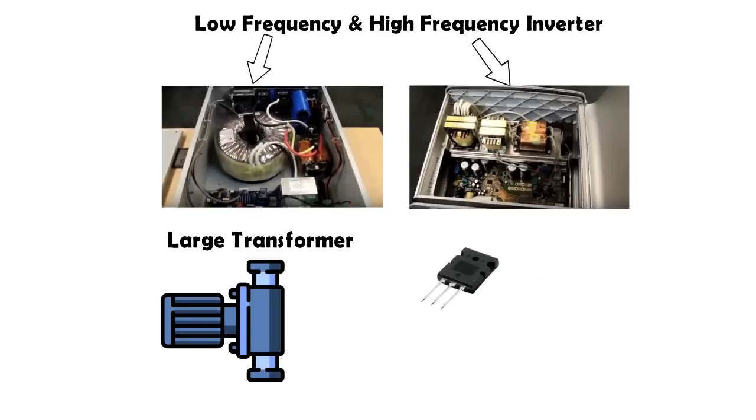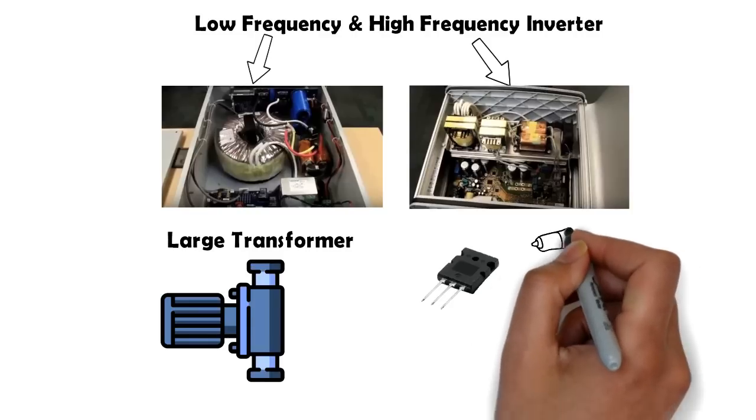In a high frequency inverter, there are almost twice the number of components compared to low frequency inverters. Nonetheless, they are still smaller and lighter overall because of the absence of a large central transformer. They are not very well equipped to handle industrial loads, and therefore if a large pump, a motor, or an air conditioner is required to be run, then a low frequency inverter is a better option.